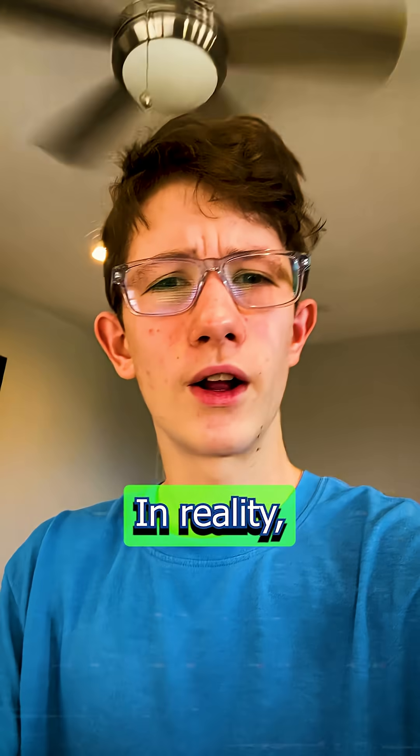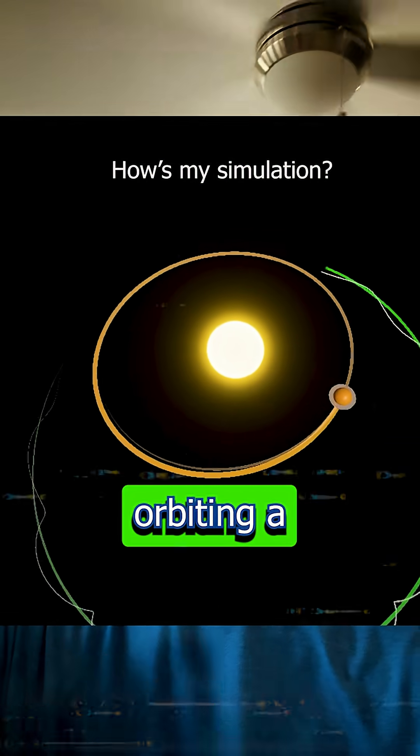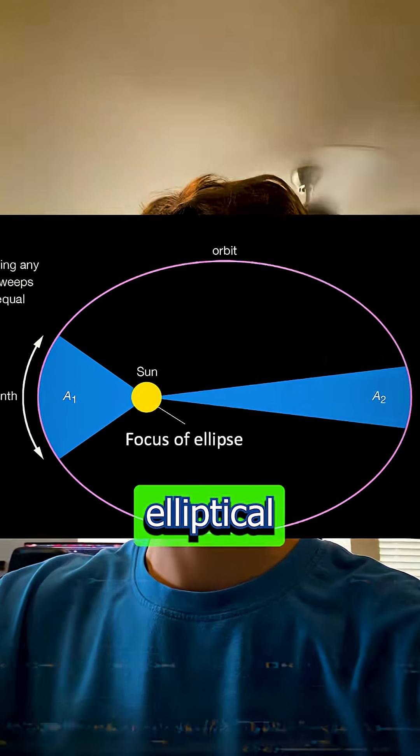but the electrons, on the other hand, in reality, they're nothing like they're shown here. They aren't just really tiny spheres orbiting the nucleus, like planets orbiting a sun in tidy, circular, or elliptical paths.